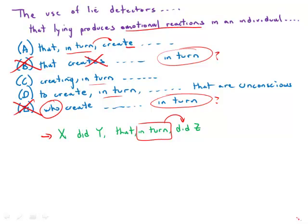D is very strange. 'Emotional reactions to create'—putting an infinitive in there implies intention. It implies someone is trying to create these unconscious physiological processes. Now that is just nonsense, so that is just incorrect. We'll get rid of the infinitive.